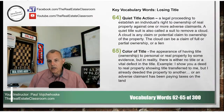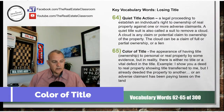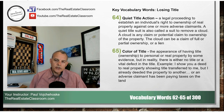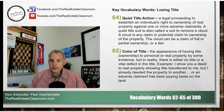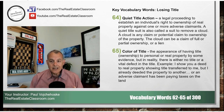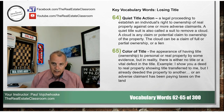Number 65 is color of title. It's a key term that people really have a hard time understanding. The definition is: the appearance of having title or ownership to property — whether personal or real — by some evidence, but in reality there is either no title, no ownership, or there is a vital defect in the title.